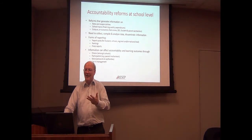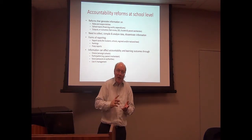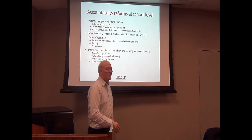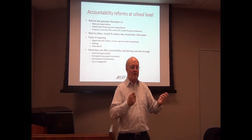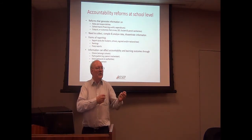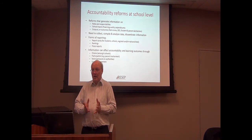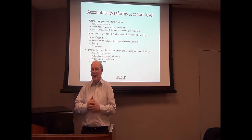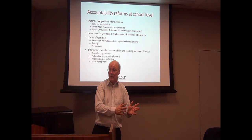Forms of reporting include report cards for students, schools, and regions at the national level. You could have a ranking system of schools, which has its own problems, or press reports — sometimes these happen without anyone within the education system playing a role. All of this can influence accountability and affect learning outcomes in different ways. People may decide on the basis of information to move their child from one school to another. If that happens on a large enough scale, it may put pressure on the system and lead to improvement in weaker schools.